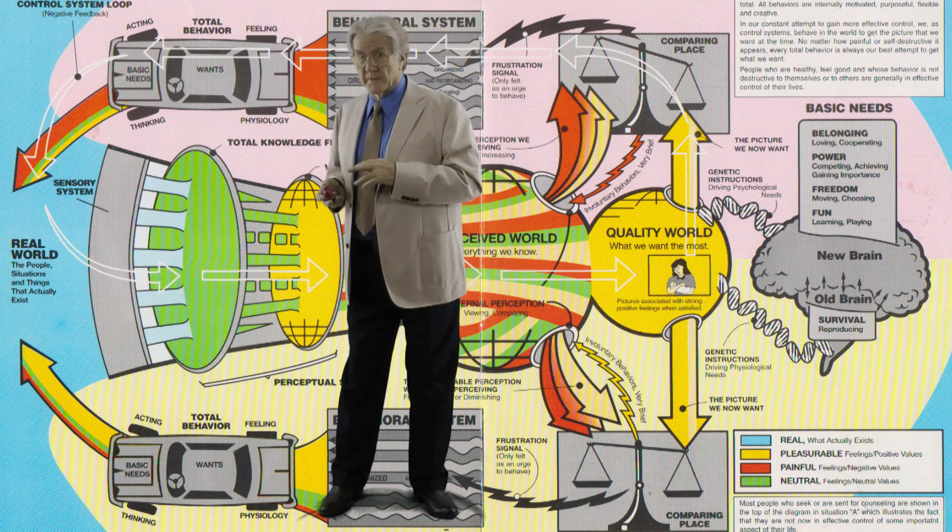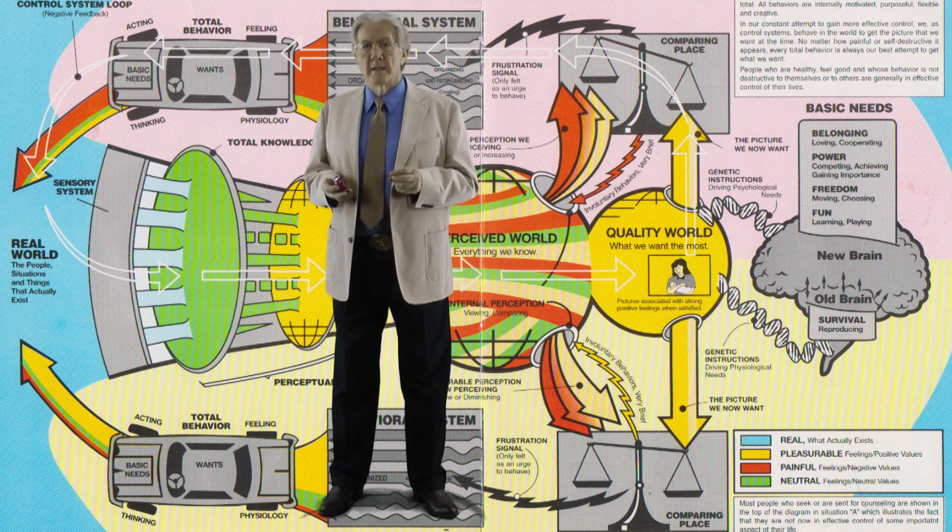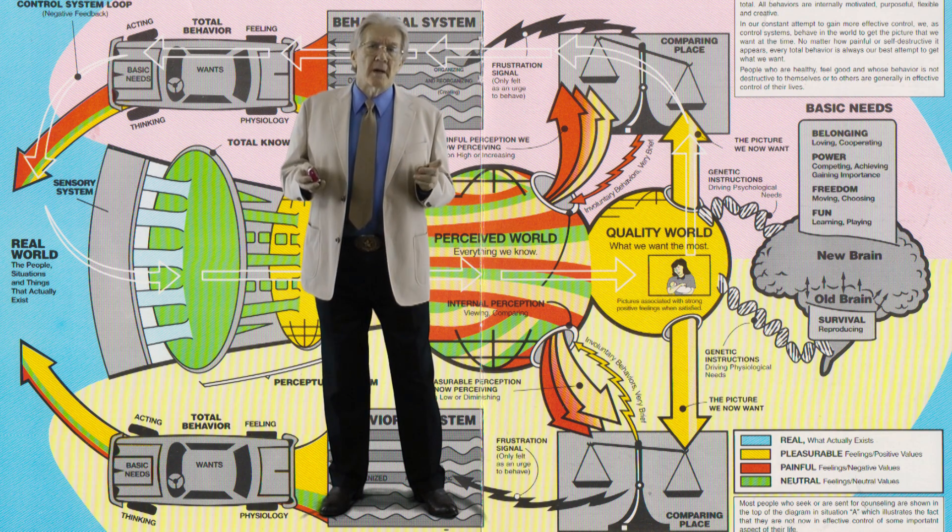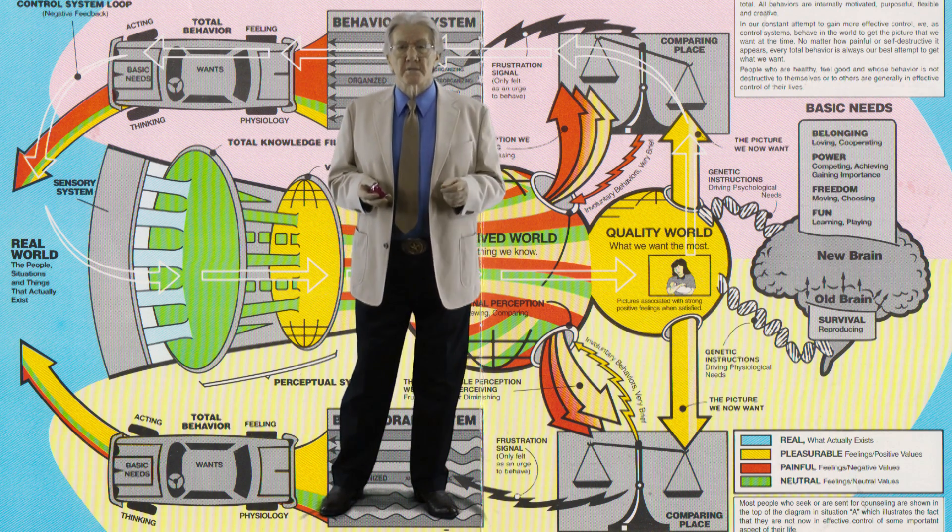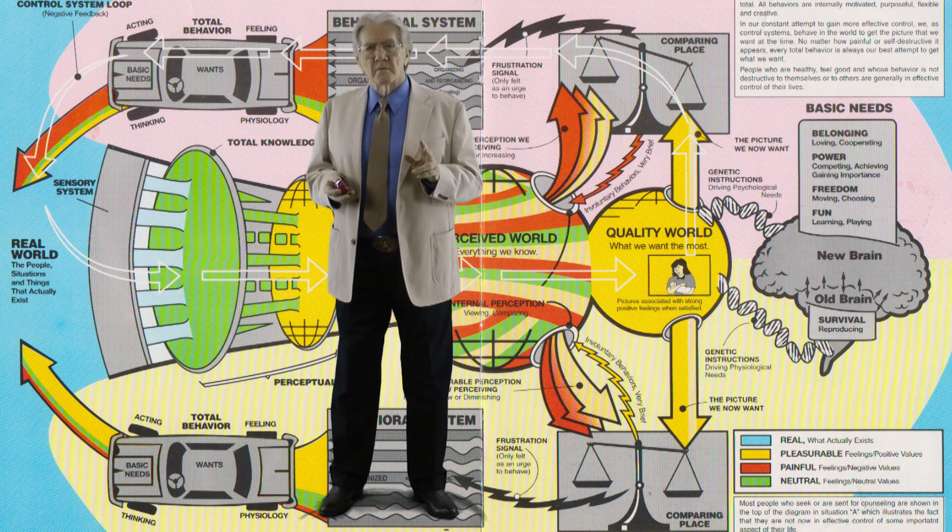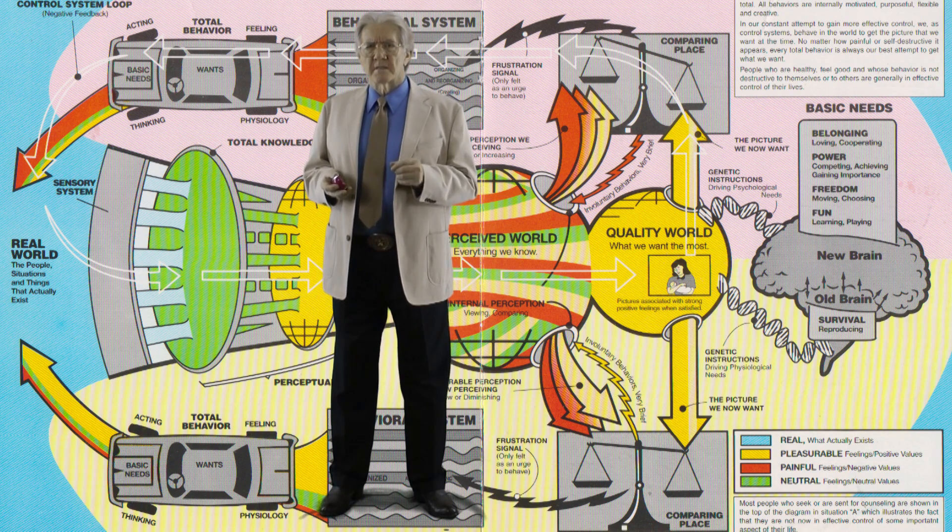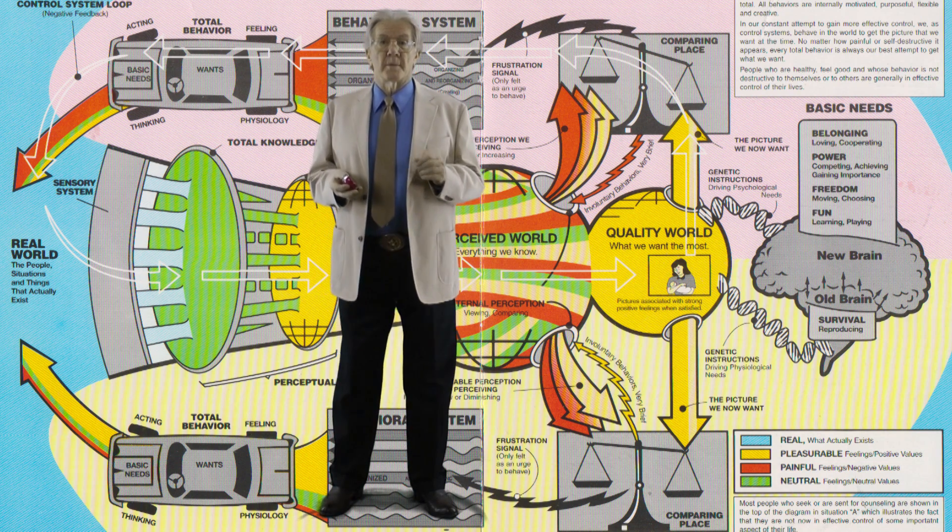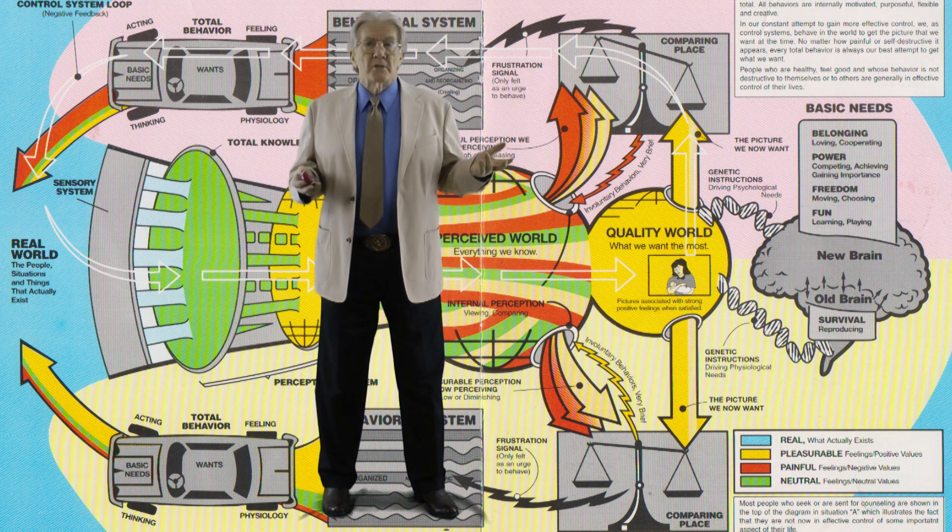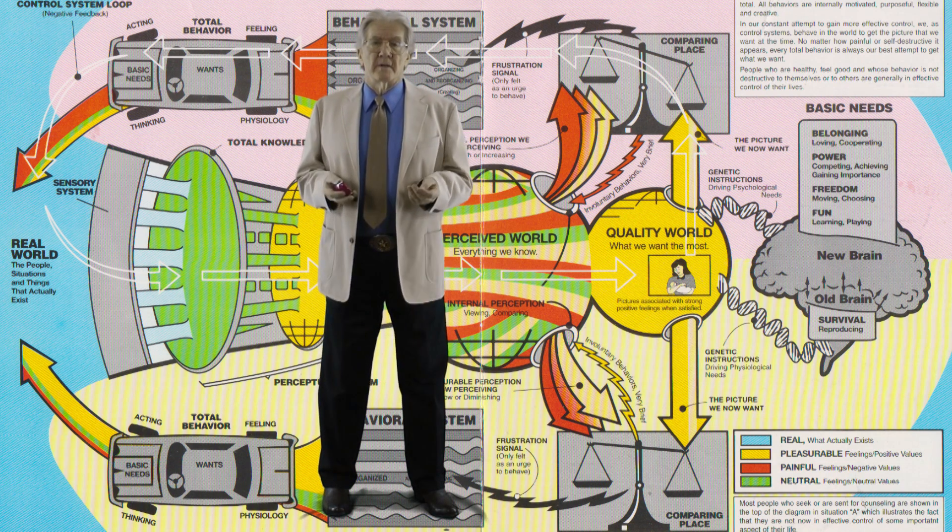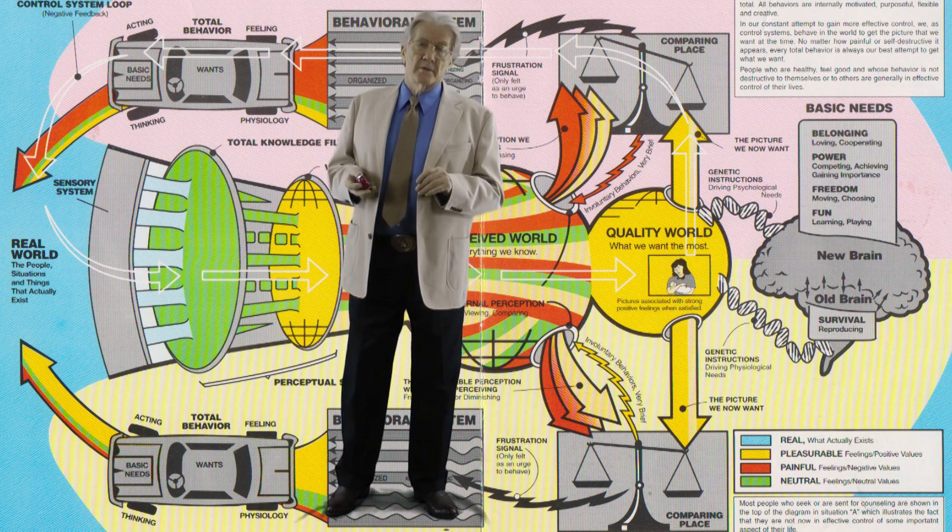Then with the help of the values filter, we do a quick determination of how we are going to respond. The values filter is the place where we compare what we are getting, the actual temperature if we are following our thermostat analogy, with our needs and what we want from the present situation, which is our setting on the thermostat. Based on this evaluation, the information goes into our perceived world where we have a choice on what to do with this perception. It could be totally neutral and just part of the background of our experience. This requires no response other than an awareness of where we are and what we are doing.